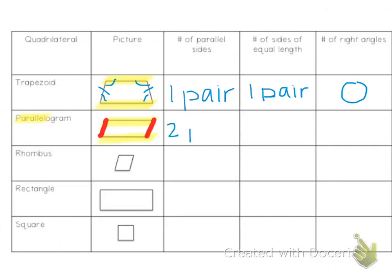This parallelogram also has two pairs of sides of equal length — the top and the bottom are the same length, and the left and the right are the same. This parallelogram has zero right angles, but again it depends on what the picture looks like. The main thing about a parallelogram is that it has to have two pairs of parallel sides.